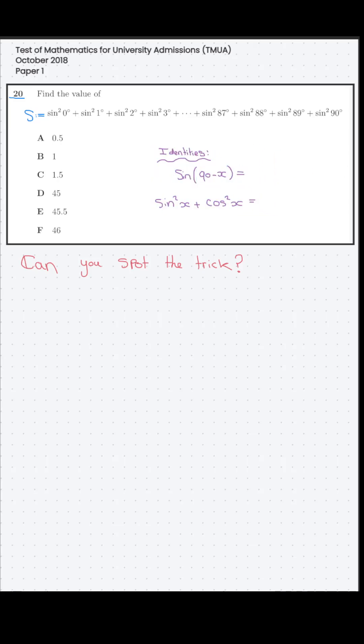The bottom one I really hope everyone knows, sine squared plus cosine squared equals 1. The top one I also hope you know, but in my experience often you don't, sine of 90 minus x is cosine x.